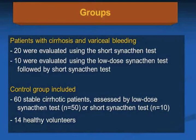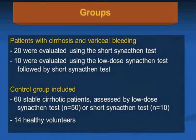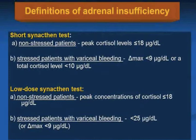20 cirrhotic patients with variceal bleeding were evaluated using the short synacthen test, and 10 using the low dose synacthen test followed by the short synacthen test. The control group included 60 stable cirrhotic patients — 50 assessed by low dose synacthen test and 10 by short synacthen test — and 14 healthy volunteers.